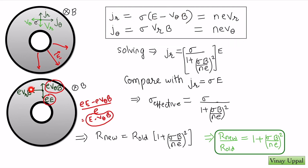So I write my Ohm's law as Jr equals sigma times (E minus VθB). Similarly, in the tangential direction, the force per unit charge is VrB, so Jθ equals sigma times VrB. These are the two sets of equations for Ohm's law in the radial and the tangential direction.